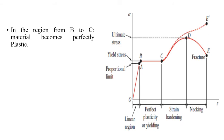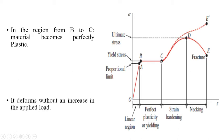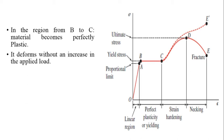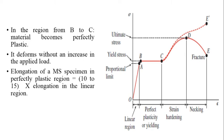In the region from B to C, the material becomes perfectly plastic — it deforms without an increase in the applied load. It is observed that the elongation of a mild steel specimen in the perfectly plastic region is about 10 to 15 times the elongation of the same specimen in the linear region.